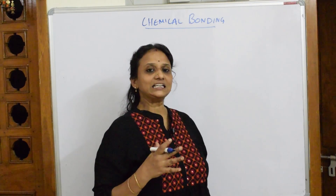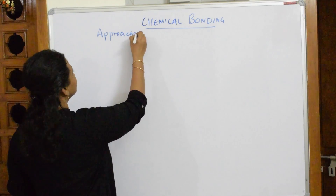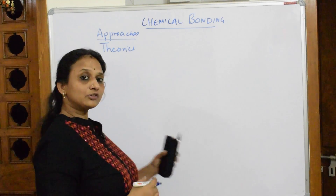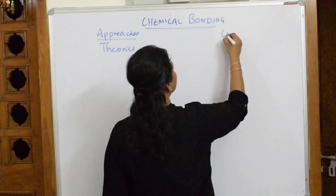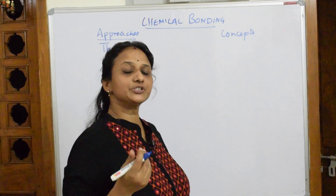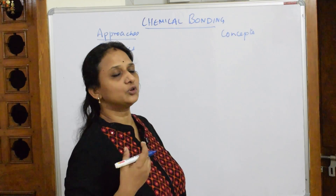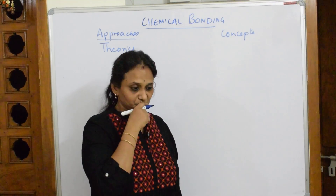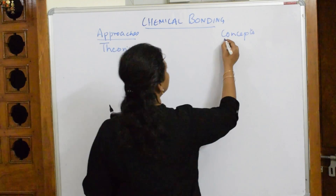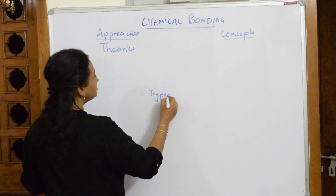The Chemical Bonding chapter is basically divided into theories — or we can call them approaches — and also classified into small concepts. NCERT is trying to introduce you to small topics so that further in your study, when you go for your master's degree, you have the basics from Grade 11.